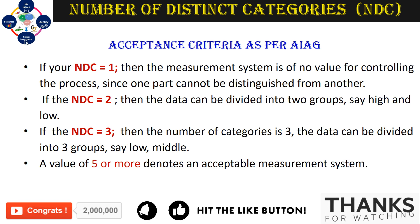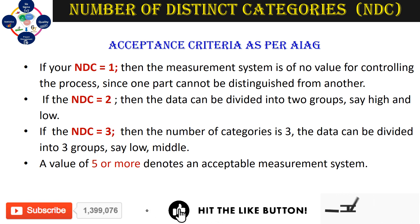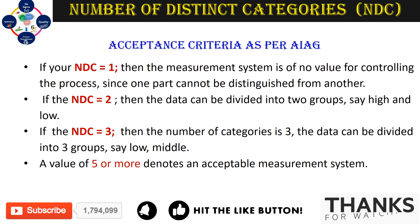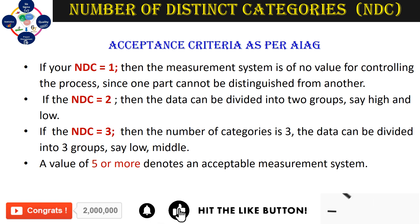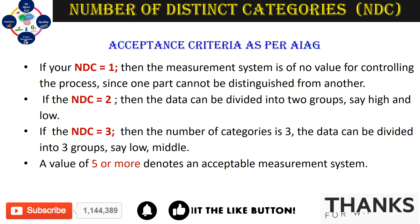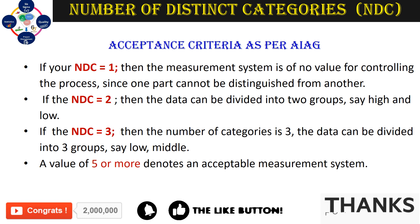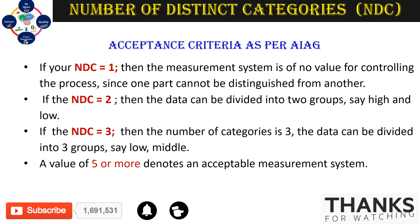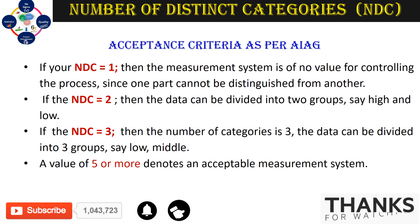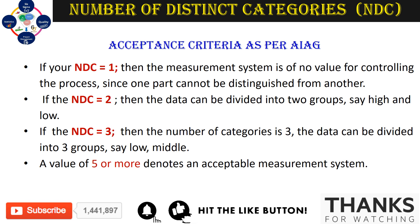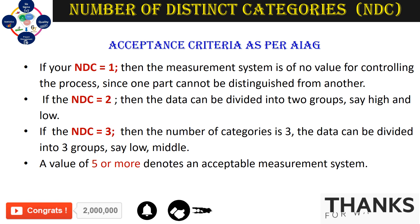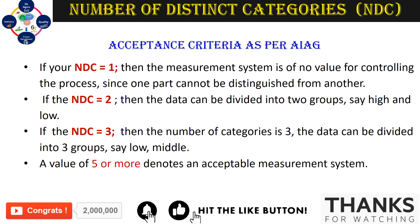If the NDC value is five or more, it is considered an acceptable measurement system. If after multiple tries you are still not getting an NDC value of five or more, there are two possible solutions. First, analyze more distinct parts that truly represent the entire range of the process. Second, increase the precision of your measurement tool. Using these two approaches, you can re-evaluate your study and improve your NDC.